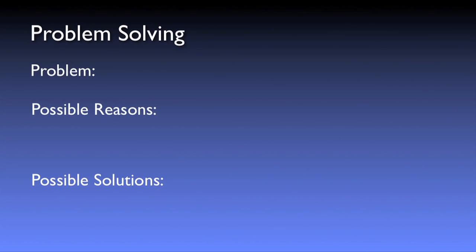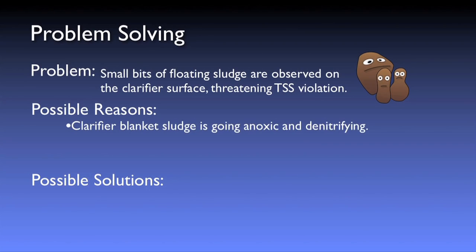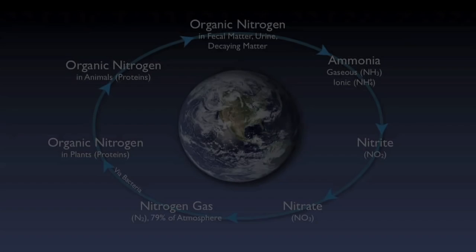Finally, during your afternoon stroll through the plant, you notice unsightly small bits of floating sludge accumulating on the surface of the clarifier. It becomes obvious that your sludge blanket at the bottom of the clarifier is going anoxic and denitrifying, causing sludge to float due to the generation of nitrogen bubbles. Letting instinct take over, you spring to action by increasing the recycle rate, thus reducing the sludge inventory time in the clarifier and preventing this unwelcome denitrification.